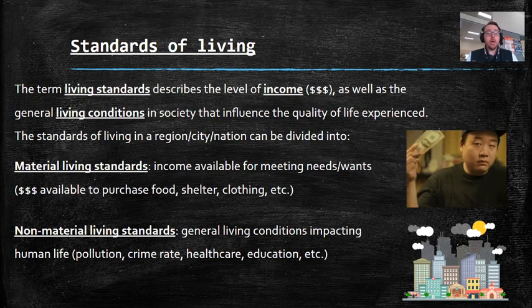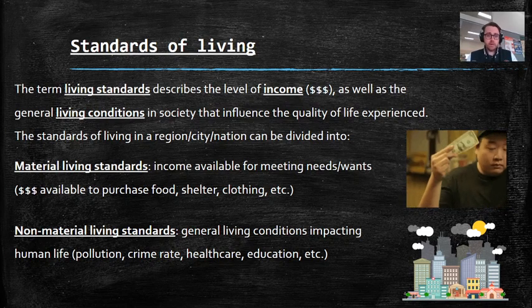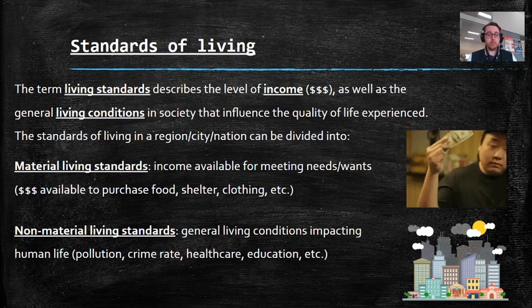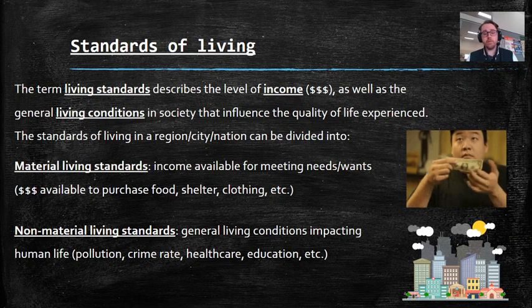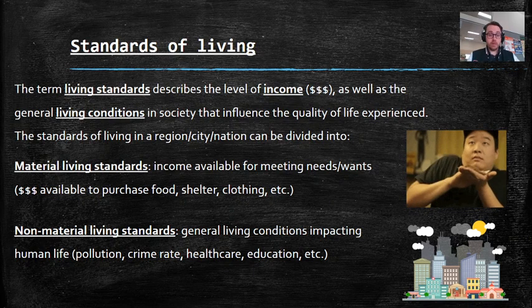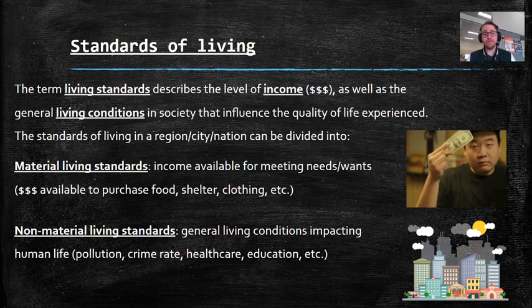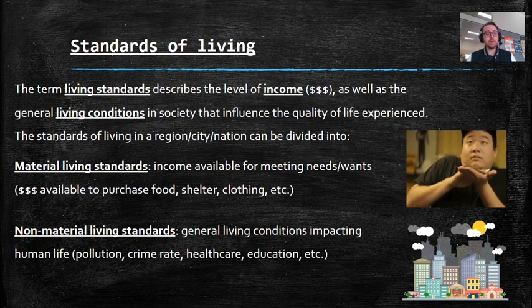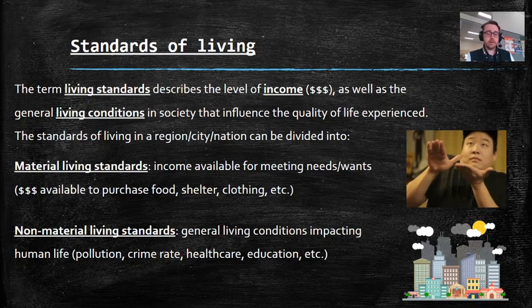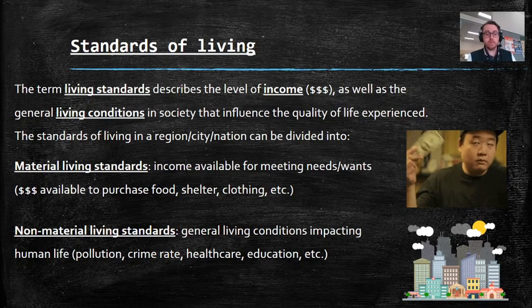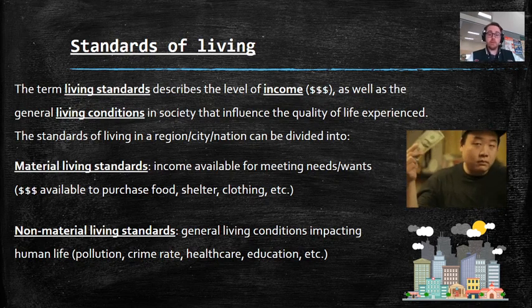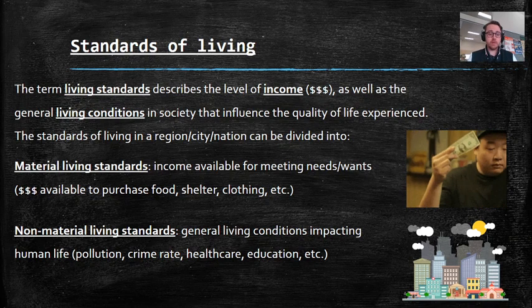You can have material living standards. If it's a material thing, it's something you can hold in your hand — it's physical. Material living standards refer to your income, the money coming in, so that you can buy materials. It's your income available for meeting needs and wants — the money you have available to purchase food, shelter, clothing, etc. Your life will be impacted by how much money you have and how much you can use to purchase food, water, etc.